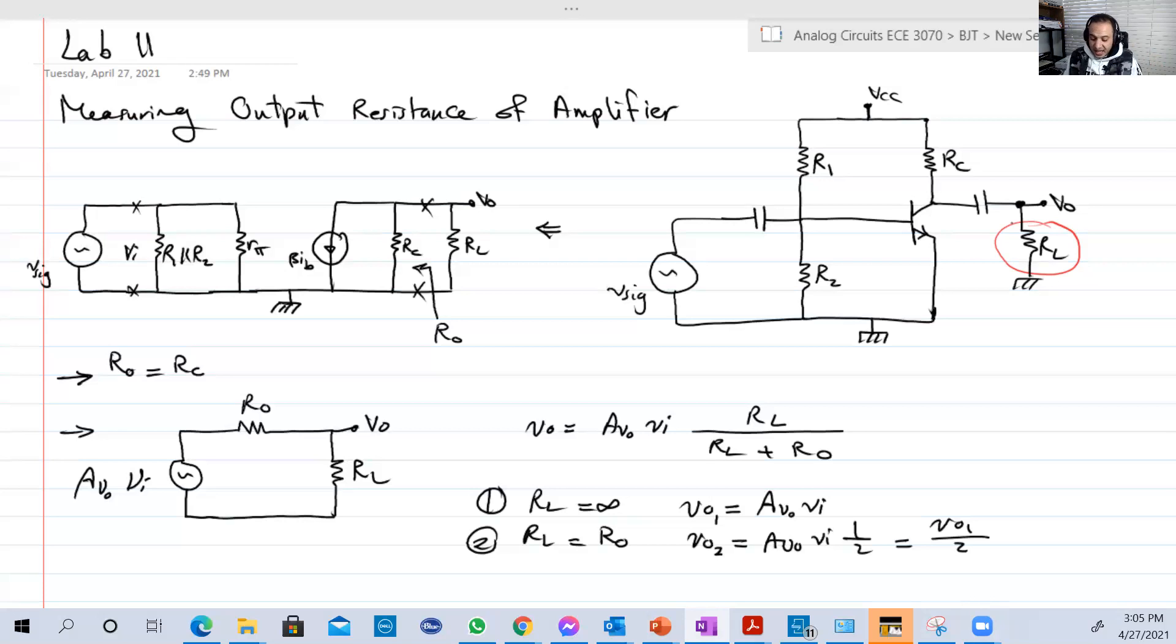So if we draw the AC equivalent circuit, it will be something like what we see here on the right of the screen. So you have here our load parallel with RC. Okay. So we said that the definition of RO is that it is the resistance that the load can see between the terminals of the load. And if we do the procedure and we try to find RO here, RO will be equal to RC.